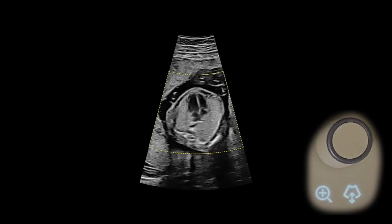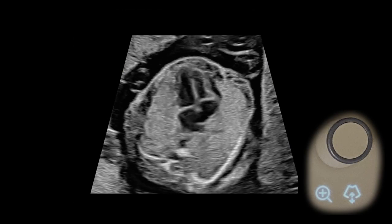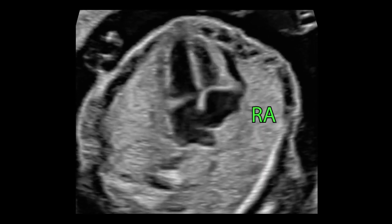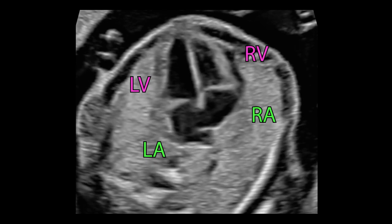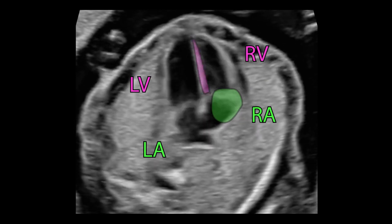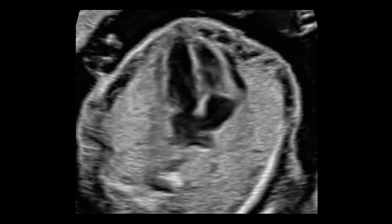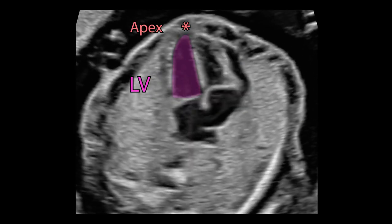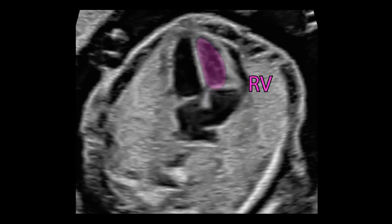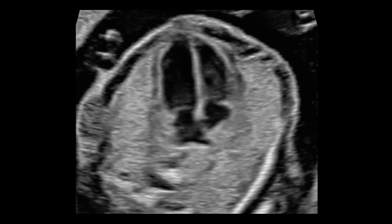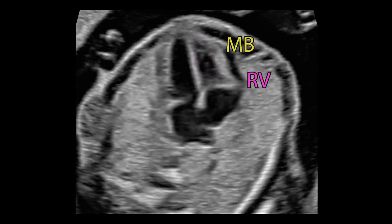The image should be magnified until the heart fills at least one-third of the screen. Confirm the existence of four chambers and evaluate the symmetry between the atria and the ventricles. The left ventricle reaches the apex of the heart. The right ventricle is adjacent to the chest wall, and the moderator band can be seen in the tip of the right ventricle.